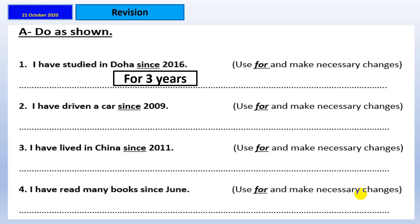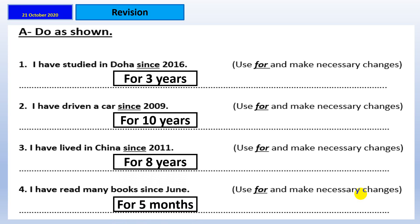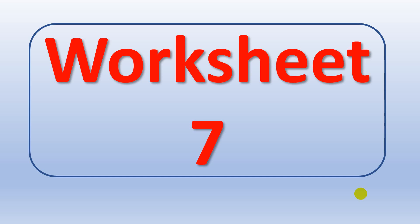Now, let's move on to the second one. I want you to answer this one in your notebook. Let us see. I haven't driven a car since 2009. Instead of since, I'm going to use for 10 years. Again, for durations. That's right. I have lived in China since 2012. Instead of since, I'm going to use for 8 years. I have read many books since June. And instead of since, I'm going to use for. I count the months and it will be 5 months.